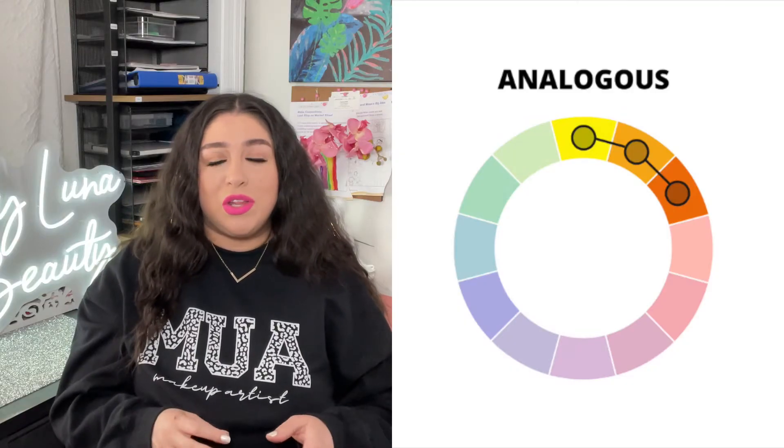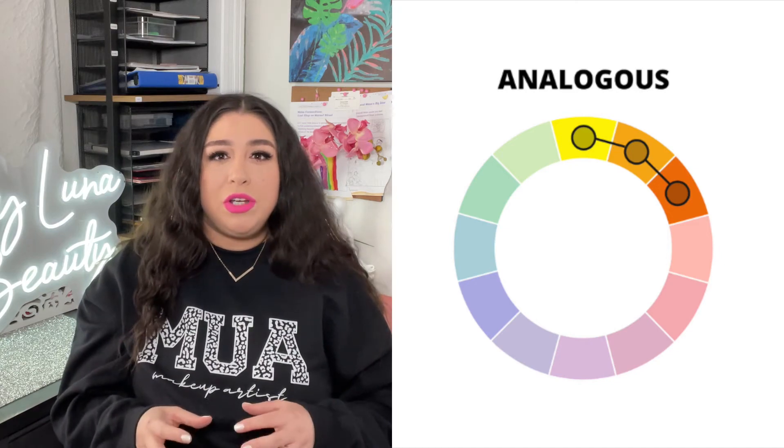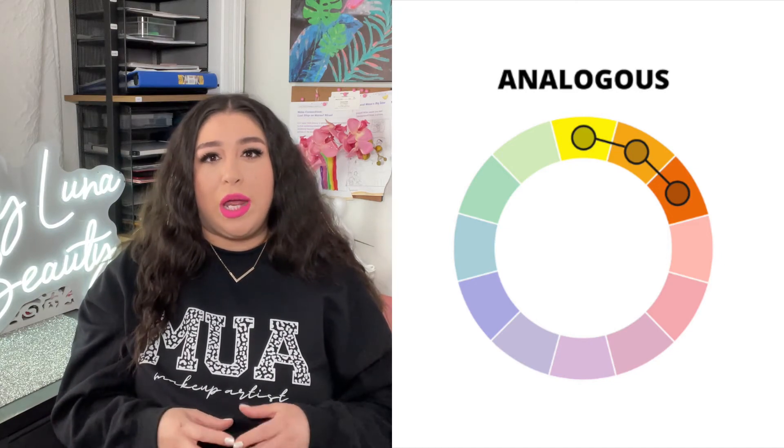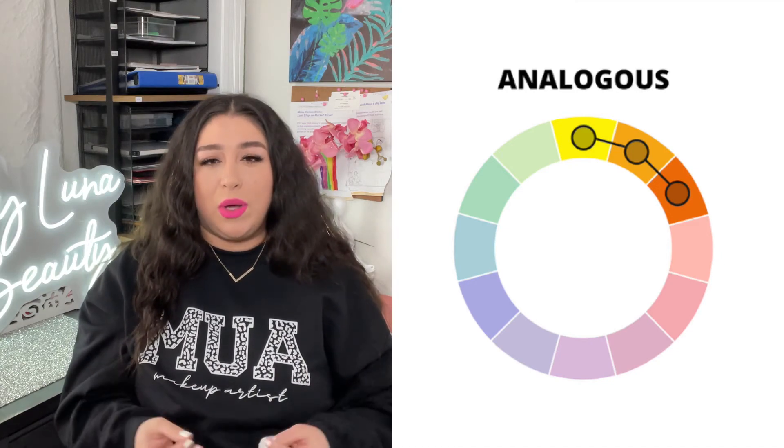Analogous colors are colors that are next to each other on the color wheel, and they are often used in makeup to create a harmonious and cohesive look. Using analogous colors can help to enhance the natural features of the face and create a more balanced and polished appearance. For example, using shades of pink and orange together can create a warm and flattering look for those with neutral or warm skin tones.